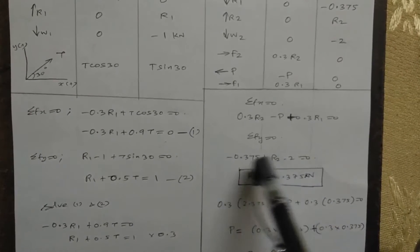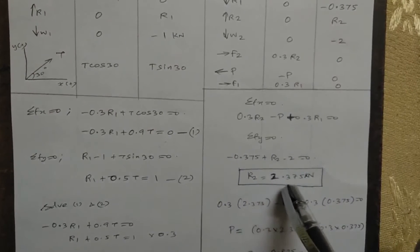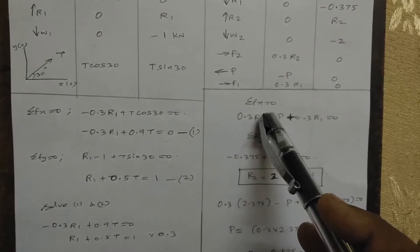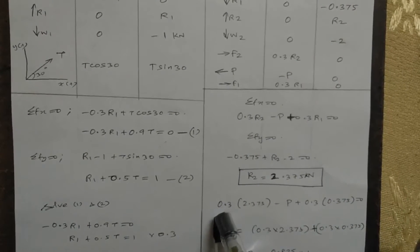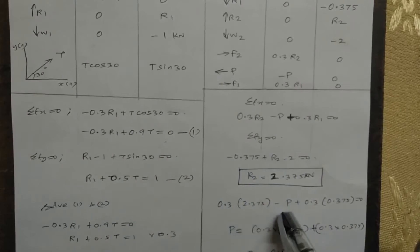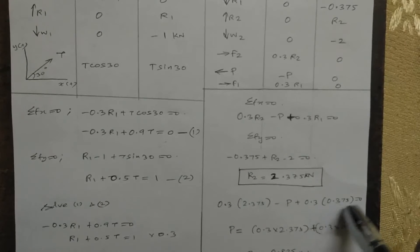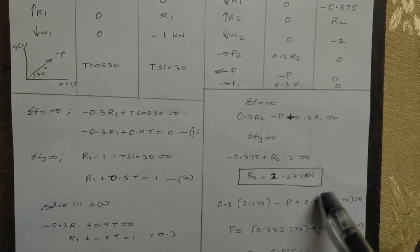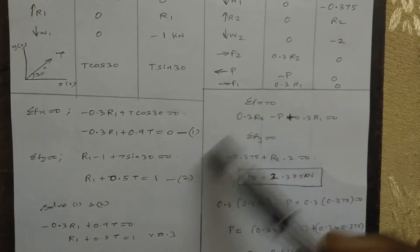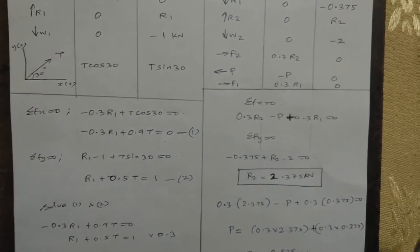From the F of y equation: R2 equals 2 plus 0.375 equals 2.375 kilo newton. Substituting R2 into the first equation: 0.3 R2 minus P plus 0.3 R1 equal to 0, where R1 equals 0.375 and R2 equals 2.375.